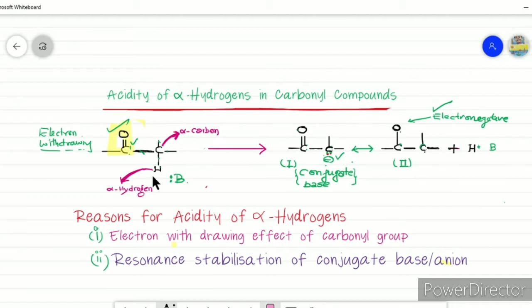These alpha hydrogens are acidic. When carbonyl compounds interact with base, this hydrogen ion is in H-positive form. The hydrogen atom, which is covalently bonded to carbon, departs as H-positive with the base.